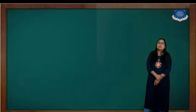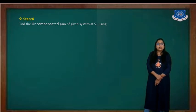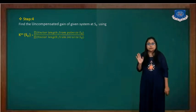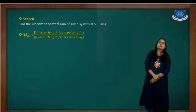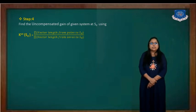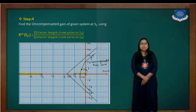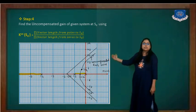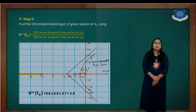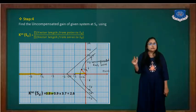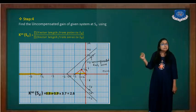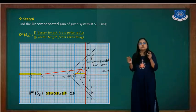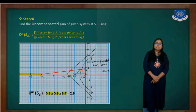Now we are finding the gain of the uncompensated system. When computing gain, we must use vector lengths. The gain K_ucsd equals the product of vector lengths from each pole to Sd, divided by the product of vector lengths from each zero to Sd. Drawing lines from Sd to each pole: Sd to 0 is 0.8, Sd to minus 1 is 0.9, and Sd to minus 4 is 3.7. Therefore K_ucsd equals 2.6.